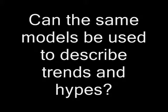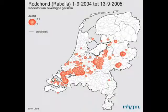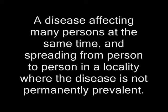But what is an epidemic? And can the same models used to describe an epidemic be used to describe trends and hypes? According to the dictionary, it's a disease affecting many persons at the same time and spreading from person to person in a locality where the disease is not permanently prevalent. Kermack and McKendrick made a mathematical model in 1927 to describe the spread of these transmittable diseases.